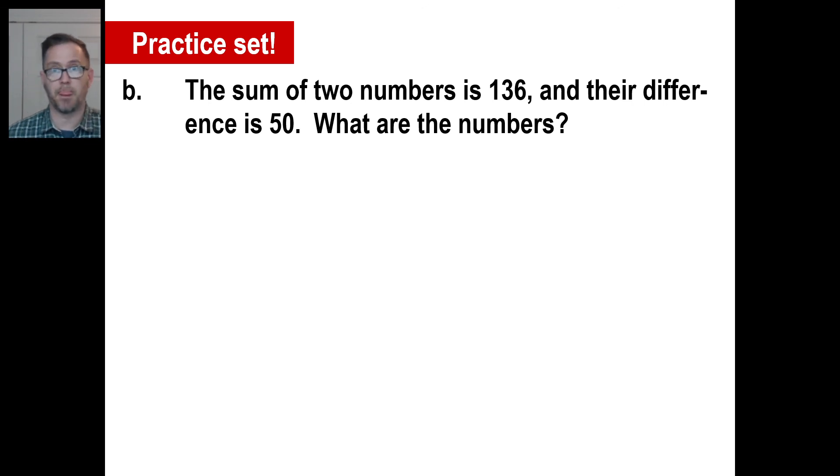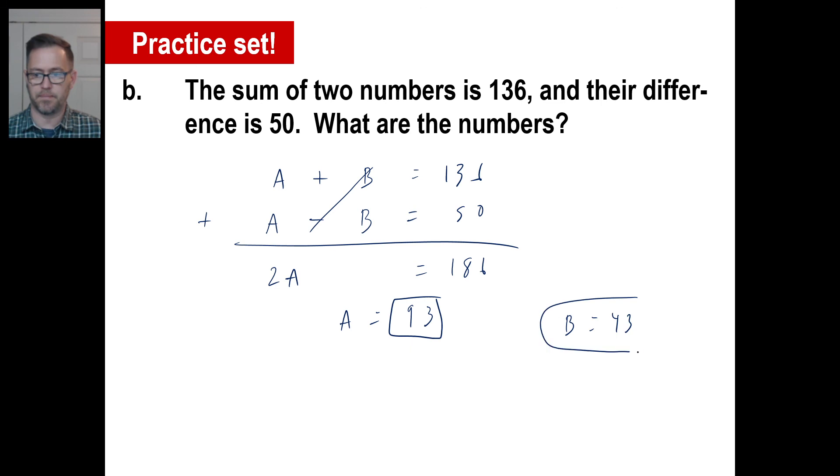Piece of cake here. The sum of two numbers is 136. There you go. The difference is 50. There you go. And I'm just going to add straight on up and down. I'm going to add it. A plus A is 2A. That goes away. 136 plus 50 is 186. 186 divided by 2 is 93. There we go. And all we need to do now is go, if A is 93, A minus something is 50. So B, we just did the arithmetic, that'd be 43.